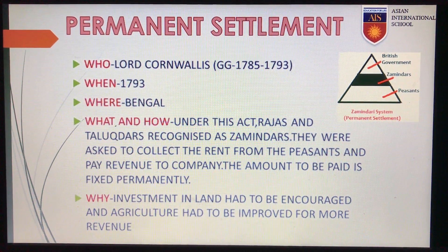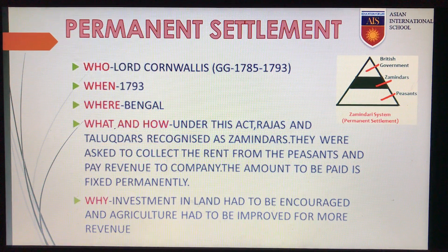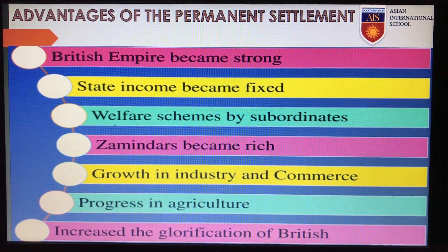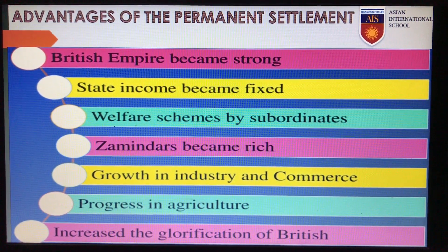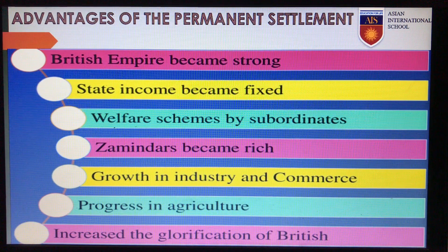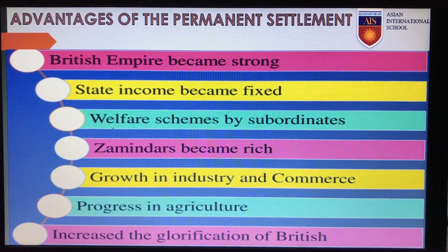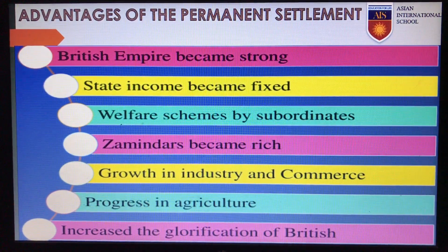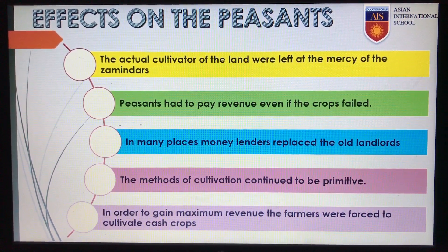The zamindar had to pay the fixed revenue even if there were adverse conditions such as floods or droughts, failing which their lands were auctioned off. Whatever remained with the zamindar after paying the revenue was his profit, and hence the farmers and peasants were again at a loss. The various advantages were that the British empire became stronger because state income was fixed, the zamindars became rich due to a higher margin of profit, and growth in industry and commerce could also be seen. All this increased the glorification of British rule in India.